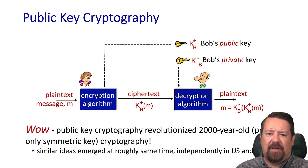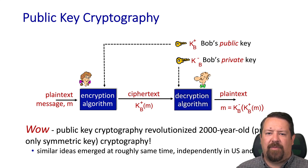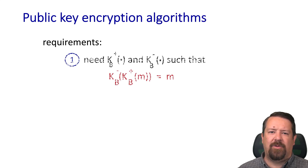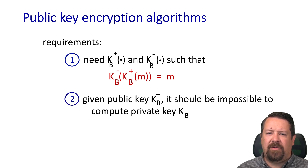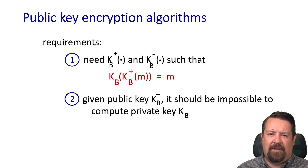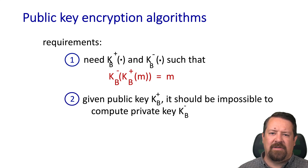It's worth noting that for thousands of years, symmetric key encryption was the only known type of encryption, and the idea of public key cryptography is quite recent and revolutionary. For a public key encryption algorithm to work, we need a matching key pair — a public key and private key — such that what's encrypted with one can be decrypted by the other. We also need that given a public key, it should be impossible to derive the private key.